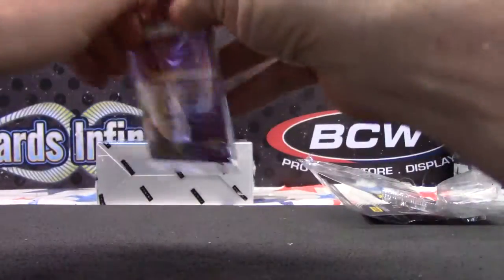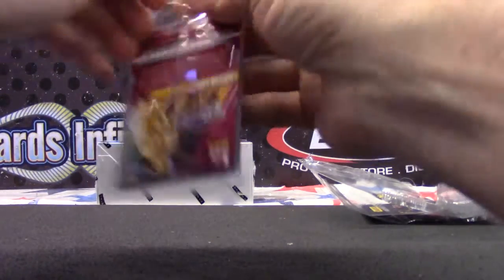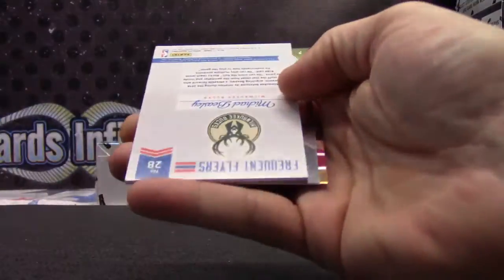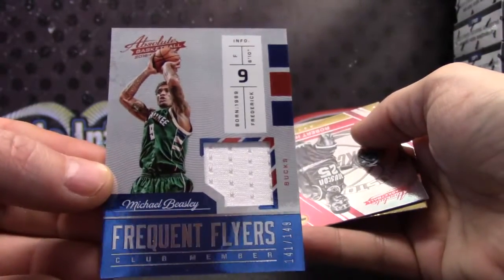Numbered to 999, Patrick McCaw. And the last one, Michael Beasley 149 jersey.